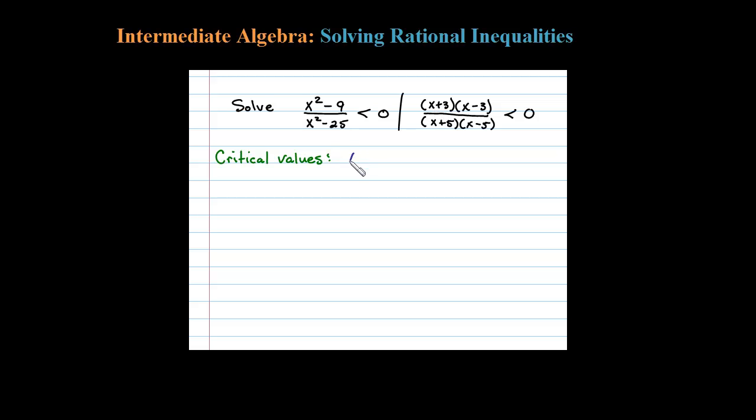Now the denominator—what makes the denominator zero here is x equals negative 5 and also x equals 5. Okay, those are actually restrictions, restrictions to the domain, but we're going to include them in the list of critical values.